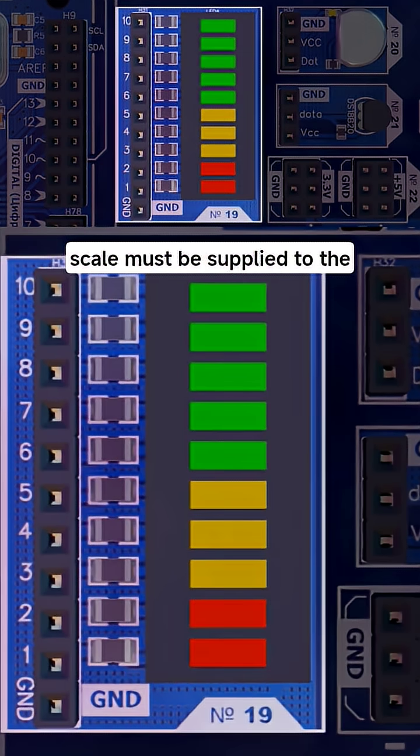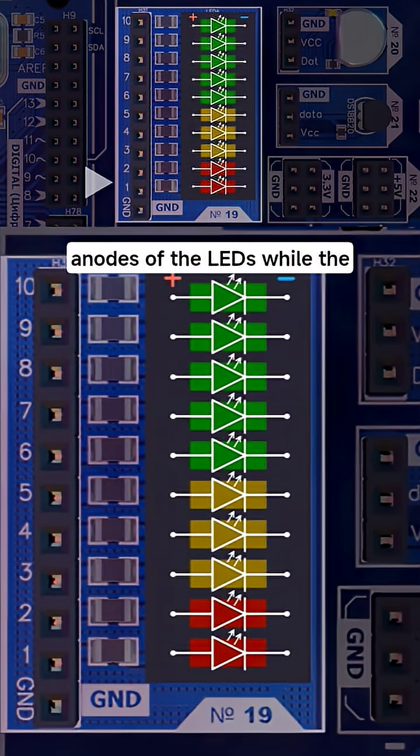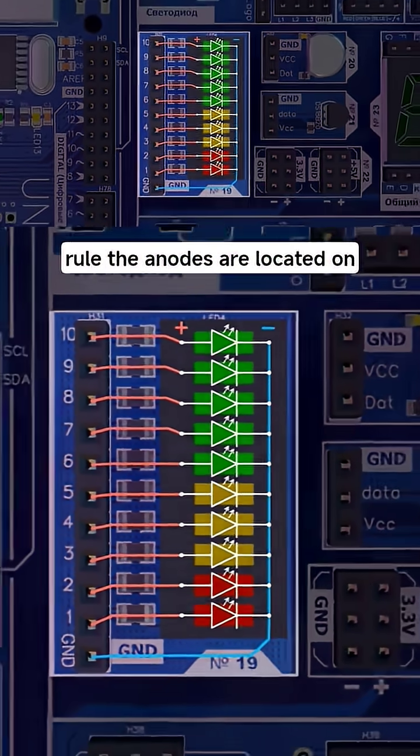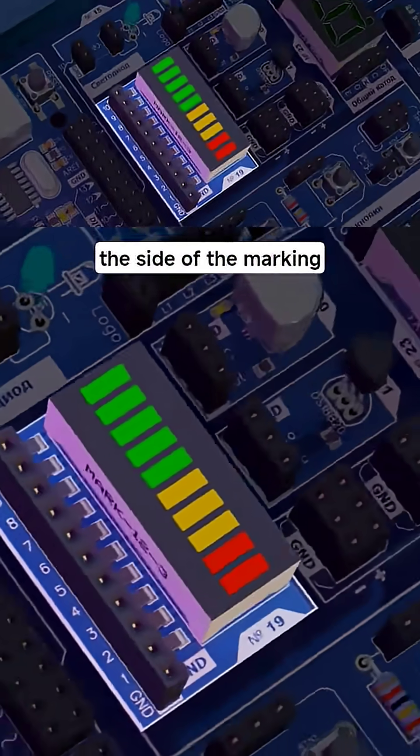Power for the scale must be supplied to the anodes of the LEDs, while the cathodes are grounded. As a general rule, the anodes are located on the side of the marking.